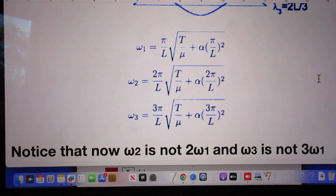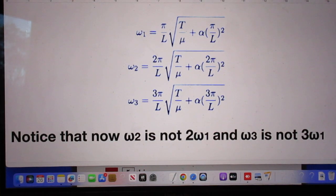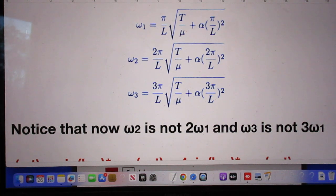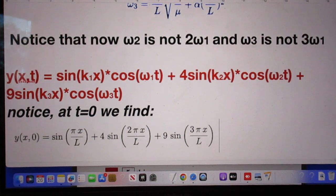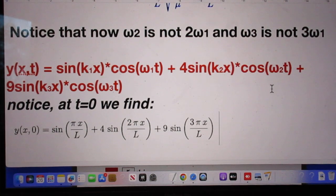So now you see the three different values for omega 1, omega 2 and omega 3. Notice that now omega 2 is not 2 omega 1 and omega 3 is not 3 omega 1, which was the case for our ideal strings. So now the final answer for c is this. This is your cosine omega 1t, cosine omega 2t, cosine omega 3t.